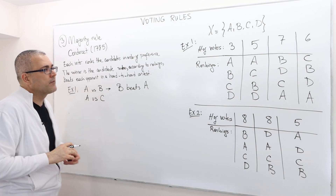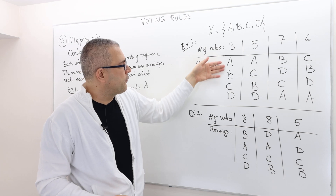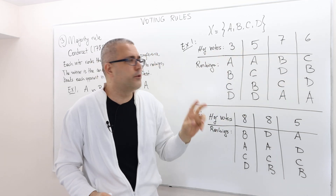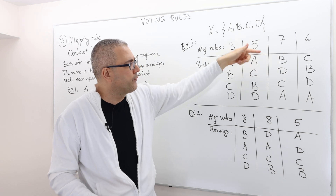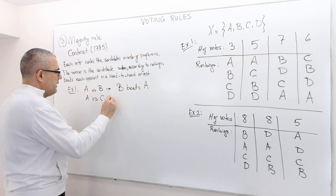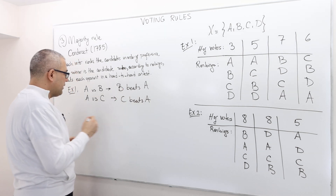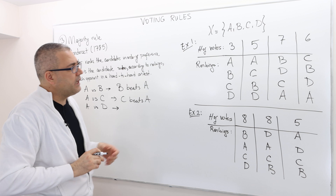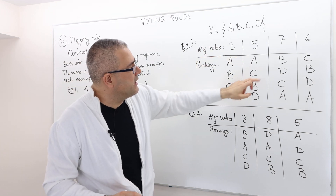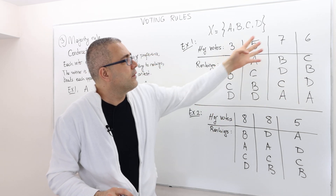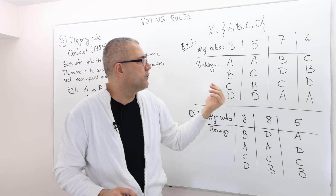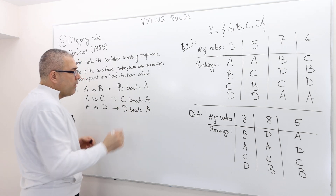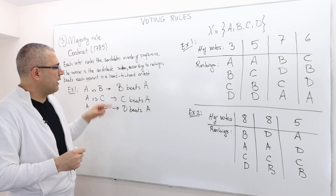What about A versus C? Eight people prefer A to C, and 13 people prefer C to A. So C beats A. What about A versus D? 13 people prefer D over A, and only eight people prefer A over D. So D beats A.